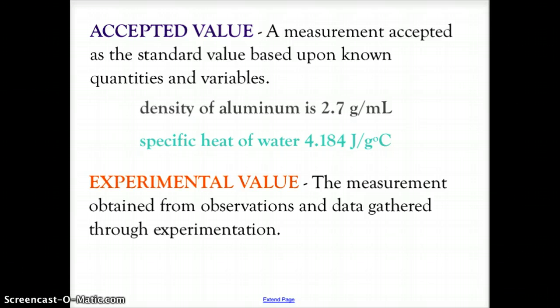The experimental value is the value that you obtain or gather through your data and observations during your experimentation — it is what you calculate based on the values you obtain.